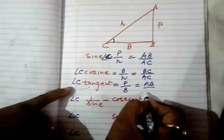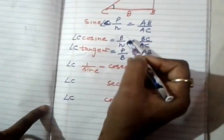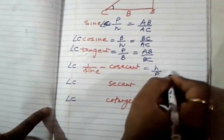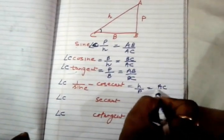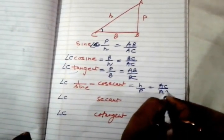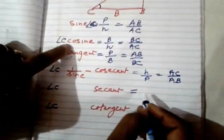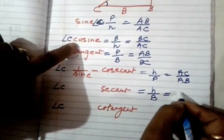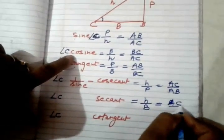Now 1 upon sine - what was the value for sine? It was P by H, so it is going to be H upon P, or in sides AC upon AB. Then second, it is reciprocal of cosine, so it is going to be H upon B, which is equal to AC upon BC.